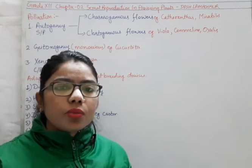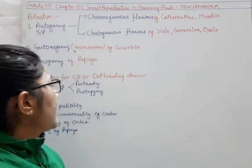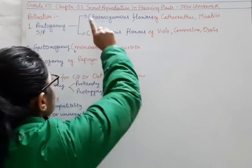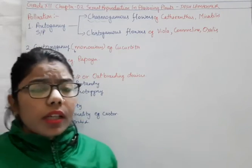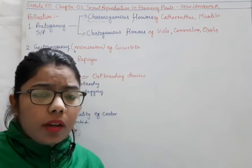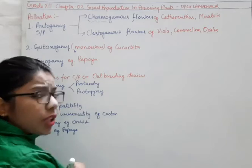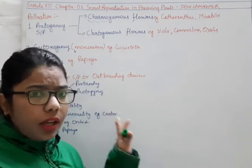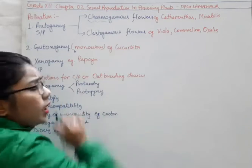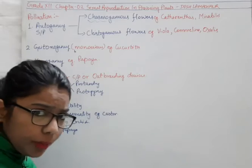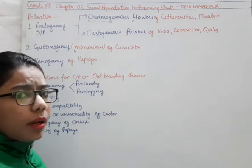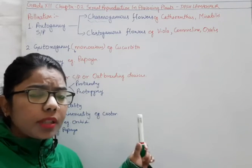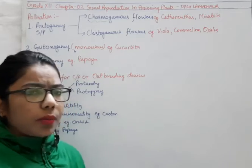Chasmo means something which is opened. If the flower is open, there is a chance that another pollen can get inside the flower — the flower opens its female part so that another pollen can come. Examples are Calanthus and Mirabilis. You have to memorize all these examples because they are important for MCQs.